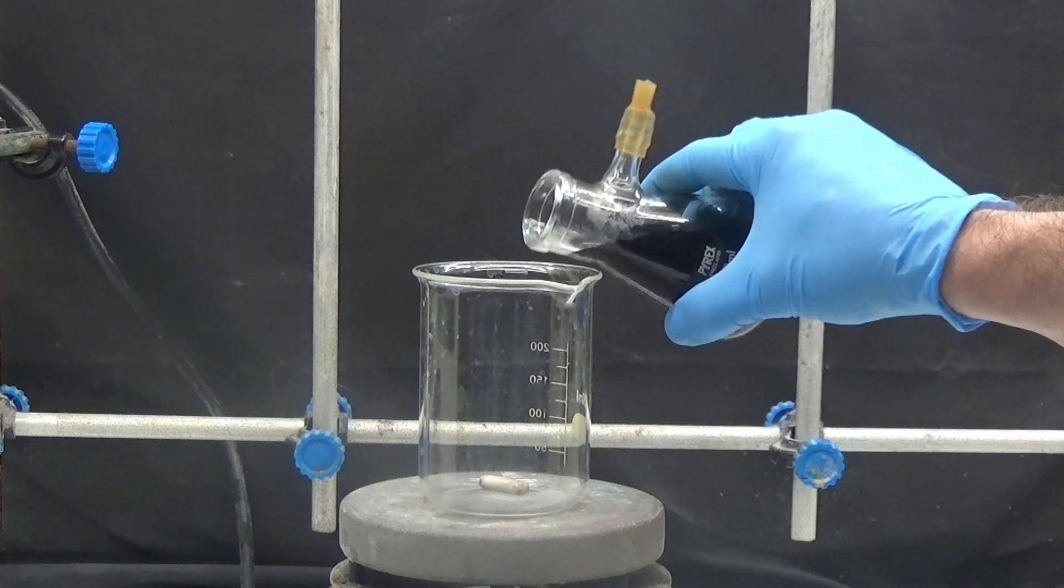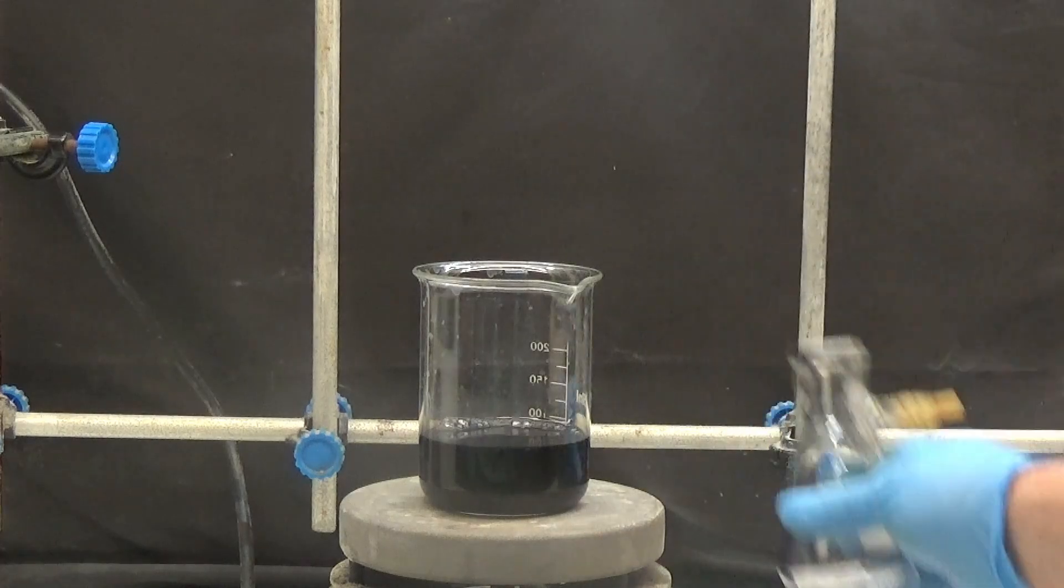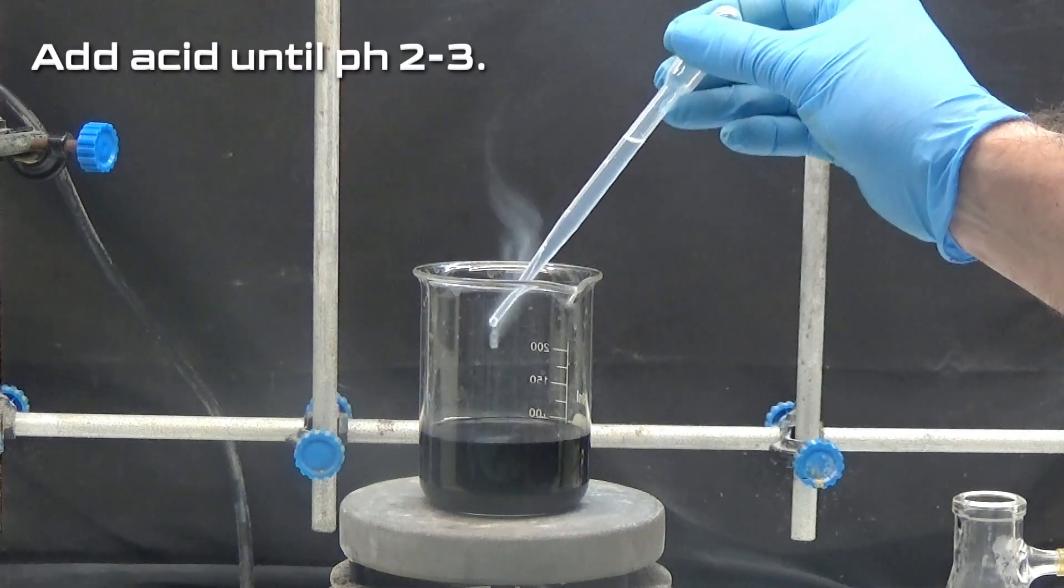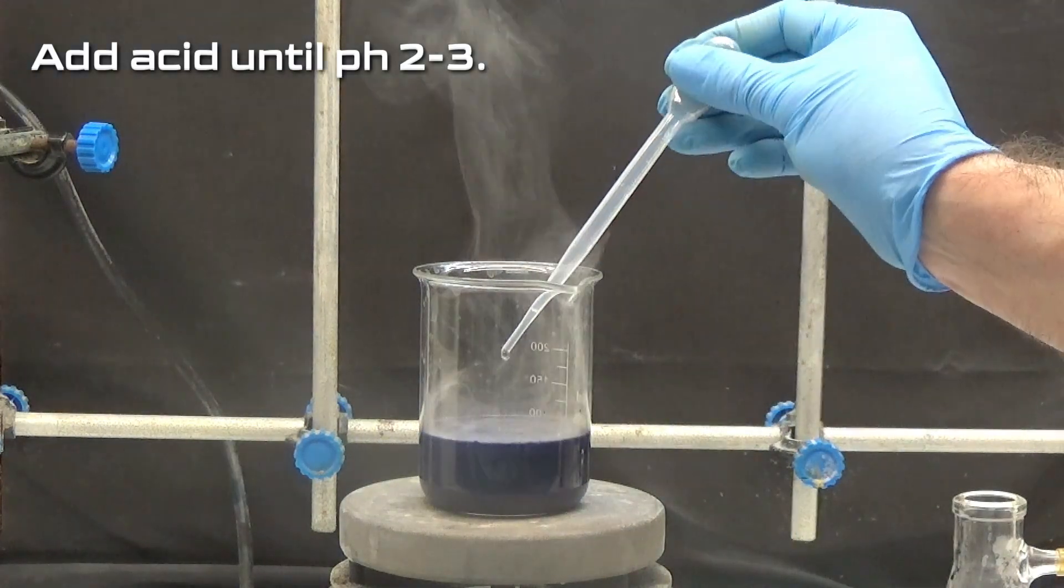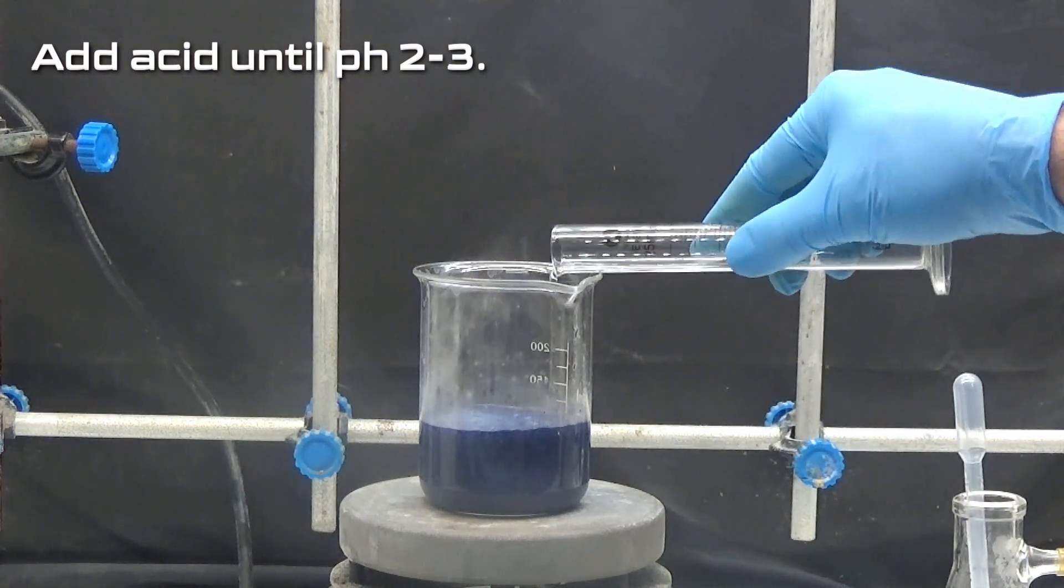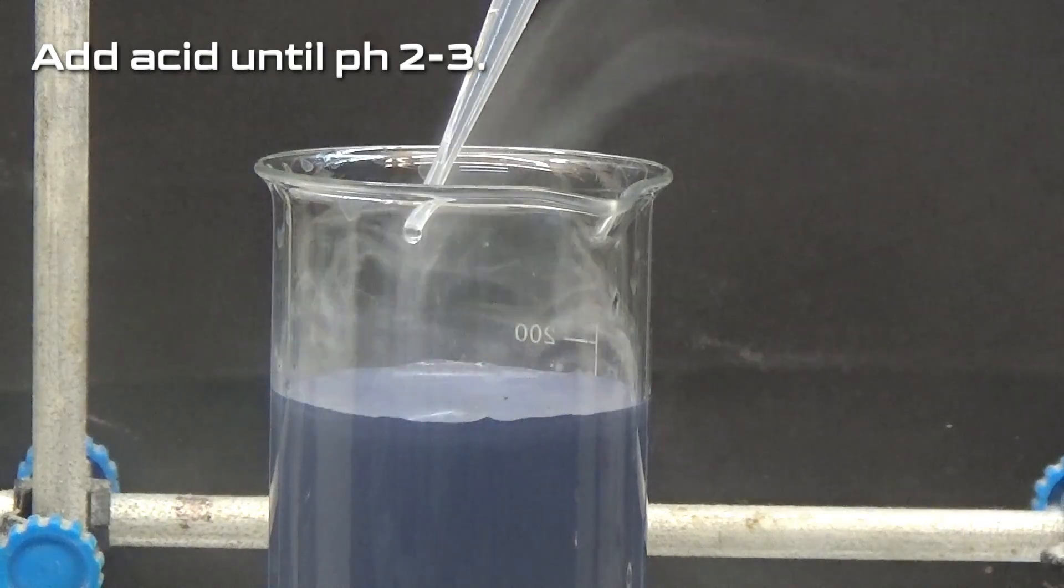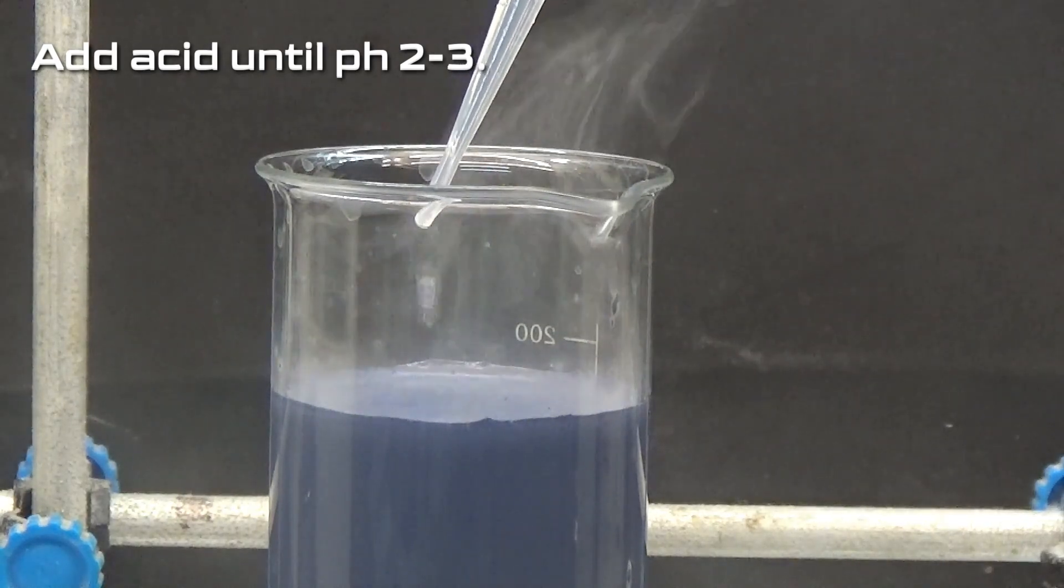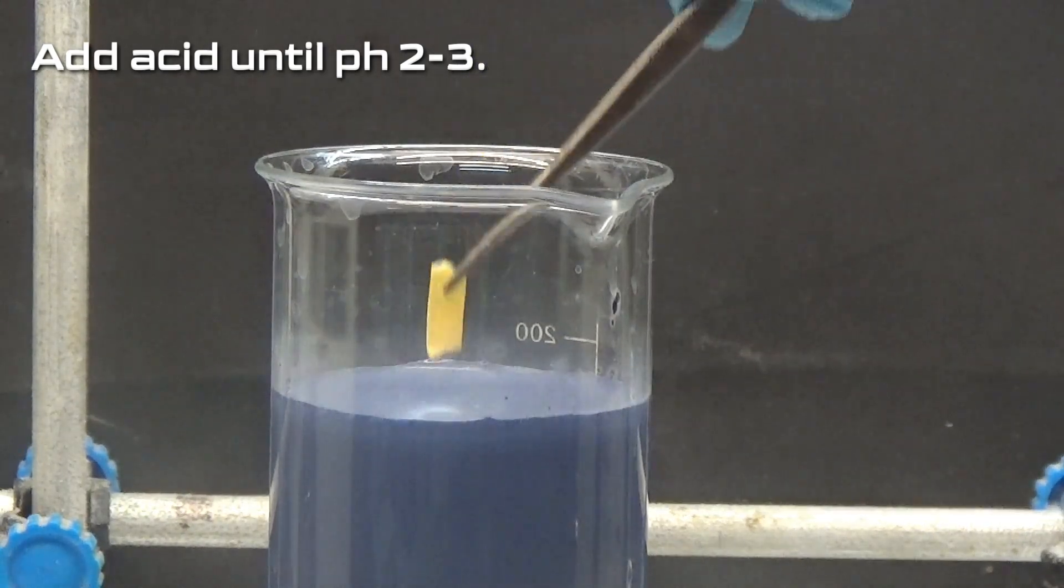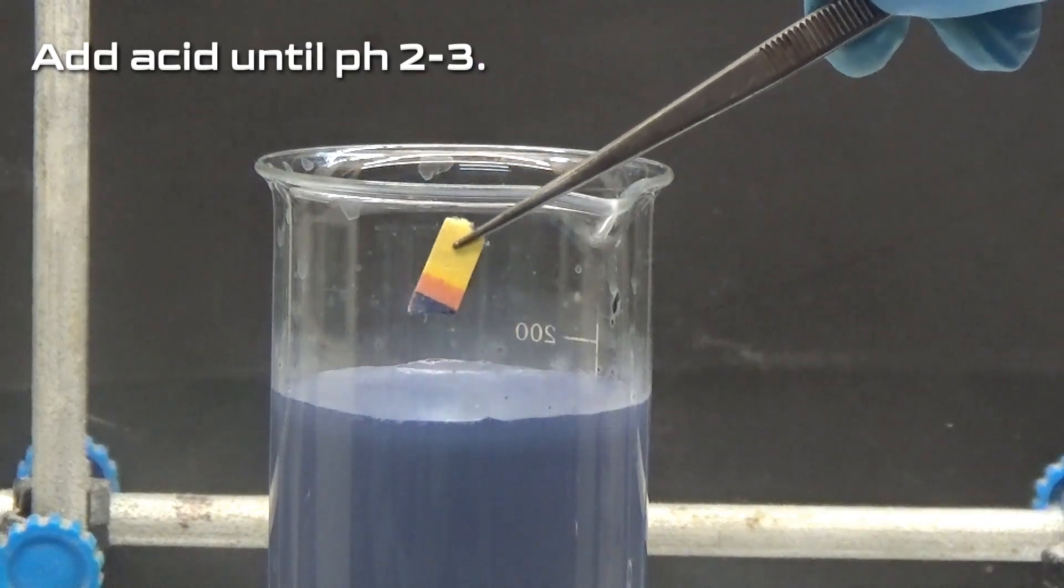The filtrate is put in a 250 milliliters beaker and concentrated hydrochloric acid is added slowly with stirring. We add small quantities of water to avoid that the precipitated acid thickens. We add acid until pH 2 or 3, verified with pH reagent paper.